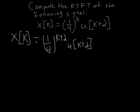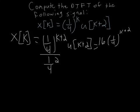But since we added this k+2 to the top we actually need to divide what we've added to the top, so it's essentially multiplying by 1. And so we solve for this and it's equal to 16 times (1/4)^(k+2) multiplied by a step function shifted by 2 still.